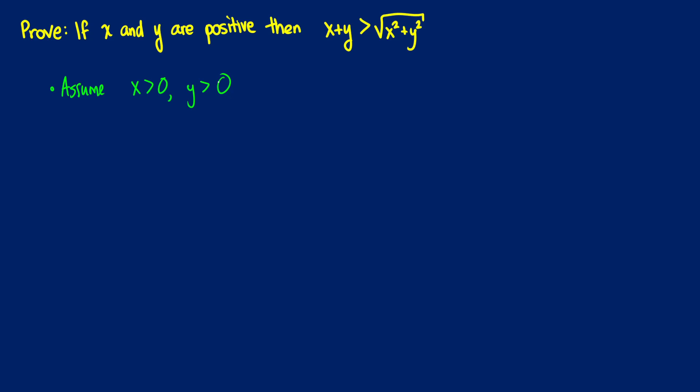Now the problem is, it's a little bit hard to figure out what to do because all we really can say at this point is that x plus y is greater than 0 if we're looking at the result we want. So instead of doing that, we're going to take a backwards approach. We're going to start with x plus y is greater than the square root of x squared plus y squared, and we're going to work backwards to see if we can get something we can work with to go forwards with.